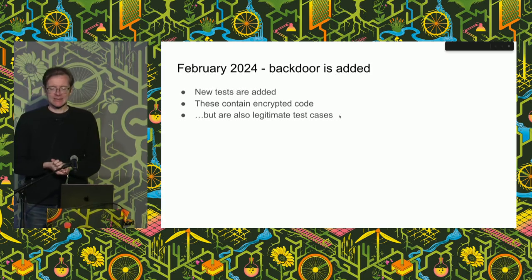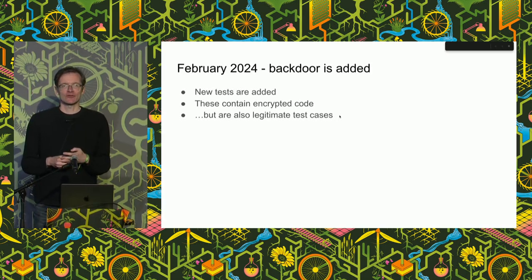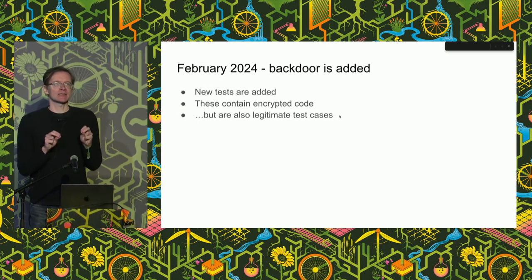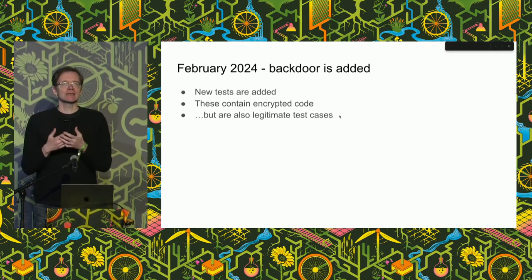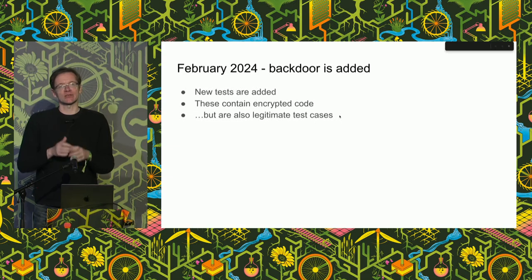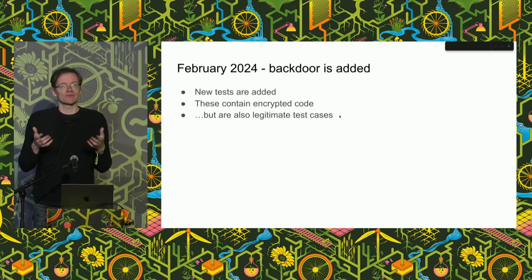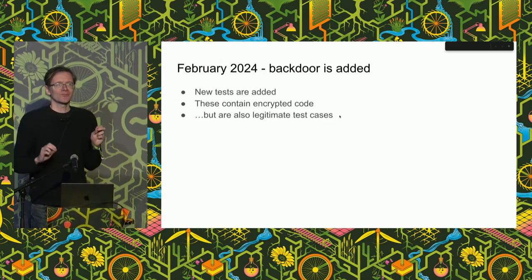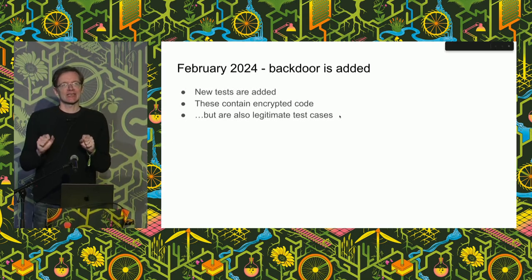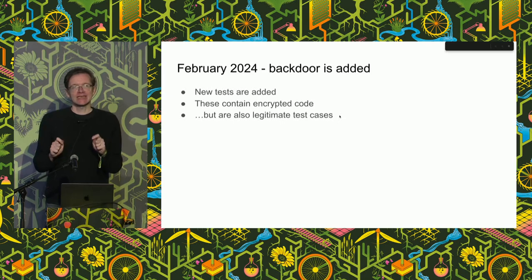Move forward to February 2024, and this is where a backdoor is inserted in an incredibly devious manner. Two new tests are added and two new test files are added for these tests to use. Both are intended to exercise failure modes not previously tested for — one is a compressed file that ends unexpectedly, one is a compressed file with allegedly garbage data inserted in the middle. You can't extract either directly because they're corrupted. The tests are allegedly introduced to make sure they fail in the expected way with the expected error message. Unfortunately, the data within these files is not random test data — it's actually encrypted code.